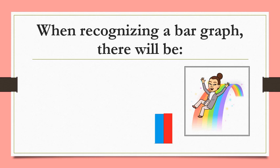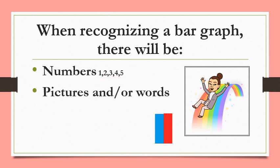When recognizing a bar graph there will be numbers, yes numbers like one, two, three, four, and five. There will also be pictures or words, and those pictures and words will be there to guide you along the way. And lastly there will definitely be bars in different colors.